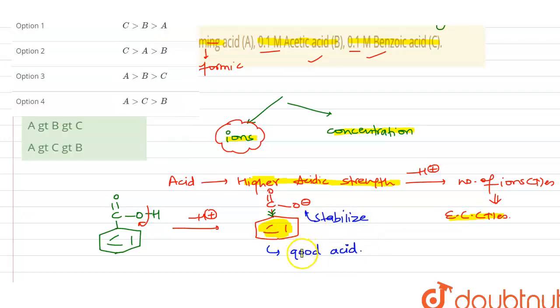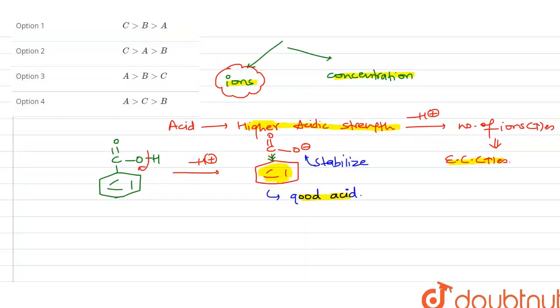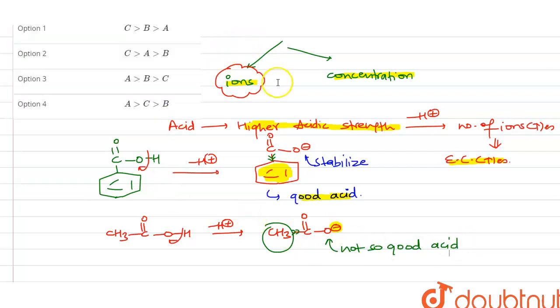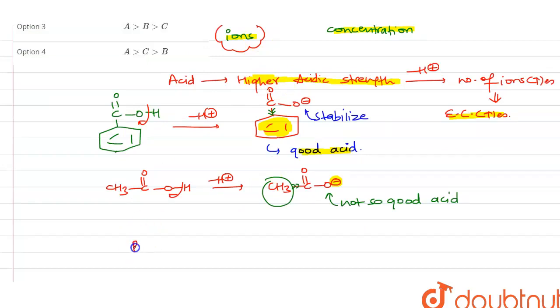Now, comparing acetic acid with benzoic acid: acetic acid has CH3-C=O-OH structure. If we lose the proton, it becomes CH3-C=O-O-. In this case, CH3 group is an electron donating group. It will donate its electrons and destabilize the negative charge. So it is not as good an acid compared to benzoic acid. Benzoic acid, having the electron withdrawing benzene group, can easily stabilize the negative charge and act as a better acid than acetic acid.